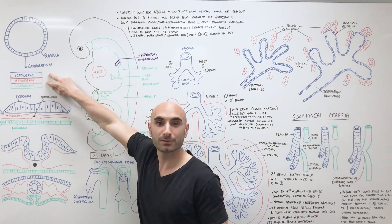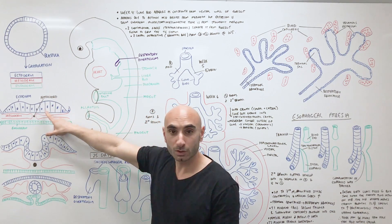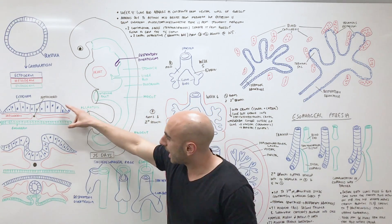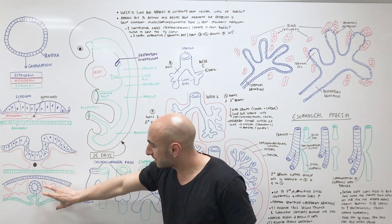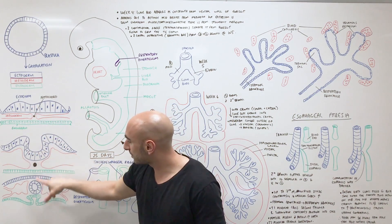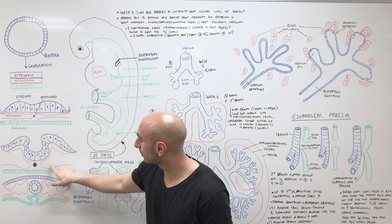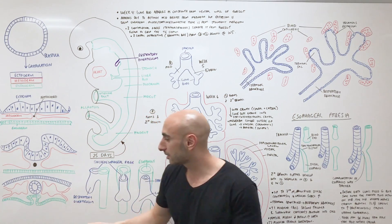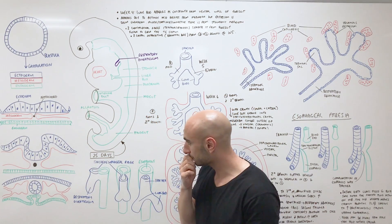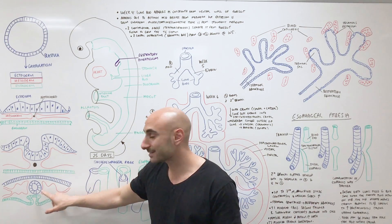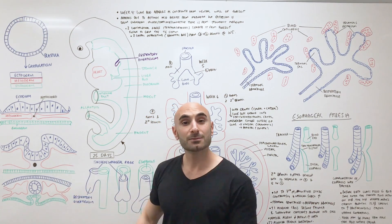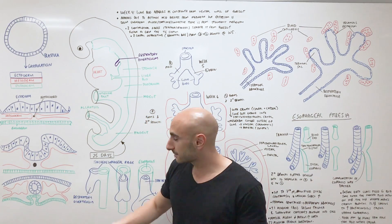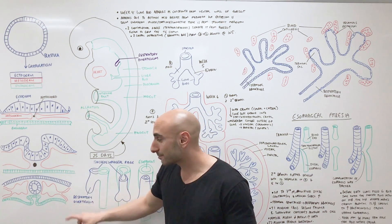This is an oversimplification. In blue we have the ectoderm, red is mesoderm, and green is the endoderm. You'll notice that the ectoderm pinches off and becomes a neural tube, the mesoderm differentiates into three parts, and the endoderm becomes tubes, pinching off as well. The mesoderm has three parts: paraxial mesoderm, which becomes muscle; intermediate mesoderm, which becomes gonad and kidney; and the lateral plates, which have a somatic mesoderm and a splanchnic mesoderm.